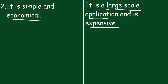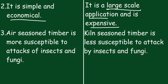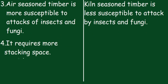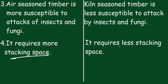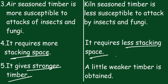Air Seasoned Timber is more susceptible to attacks by insects and fungi, while Kiln Seasoned Timber is less susceptible. Air Seasoning requires more stacking space, whereas Kiln Seasoning requires less stacking space. Air Seasoning gives stronger timber, while a slightly weaker timber is obtained from Kiln Seasoning.